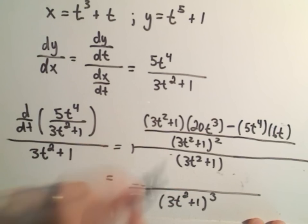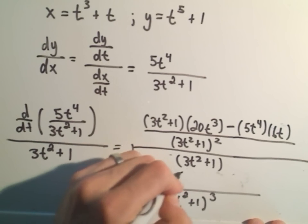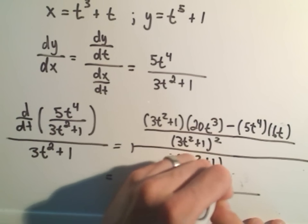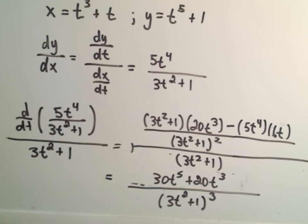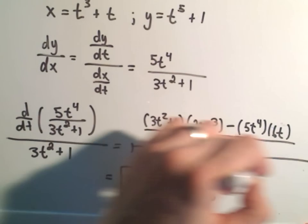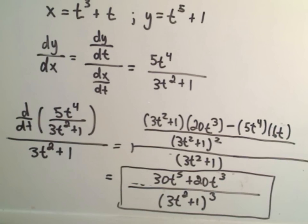So 30t to the fifth plus 20t to the third. And then I don't see any other really good ways to simplify this thing down. So hey, I would leave it just like that.